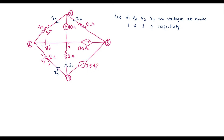Here we can observe that at node 3 and node 4, there is a voltage source connected directly. It means node 3 and node 4 are supernodes. Here we have a voltage-dependent voltage source whose voltage is Vy — the voltage across the 2 ohm resistor. Similarly, here we have a voltage-dependent current source which is dependent on voltage Vx — the voltage across the 1 ohm resistor. Since nodes 3 and 4 are supernodes, first we have to analyze them.